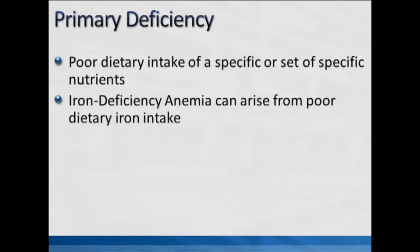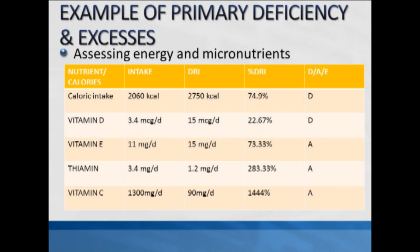A primary deficiency is related to poor intake of a specific nutrient — iron deficiency anemia, for instance, caused by poor dietary iron intake. In this slide you get an idea of how to assess somebody's diet using computerized software. In column one are the different nutrients and calorie intake; in column two the actual caloric and nutrient intake; column three the recommended intakes or DRIs; column four the percent of the DRIs; and whether the intake is deficient (D), adequate (A), or excessive (E).